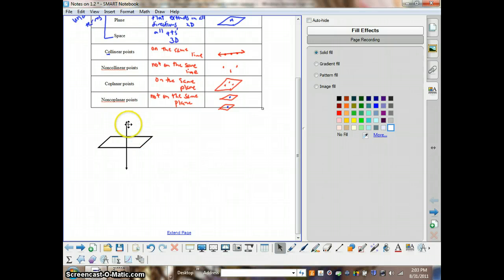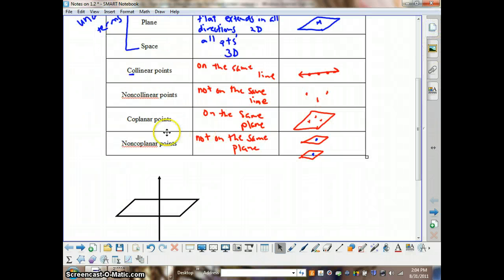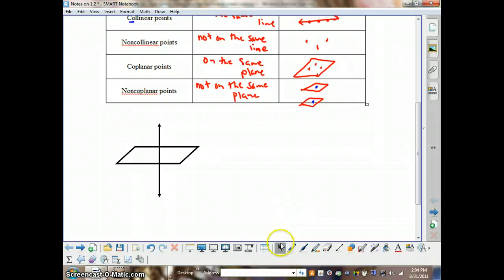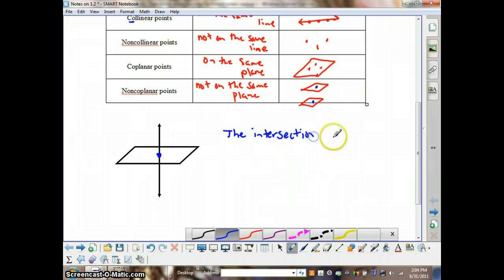So if you think about this, think about this as though you're jabbing a pencil through a piece of paper, and if you jab a pencil through a piece of paper and then pull out the pencil, you're left with a big hole. So basically what that is saying is that the intersection of this line with this plane is this point. So the intersection of a line and a plane is a point.